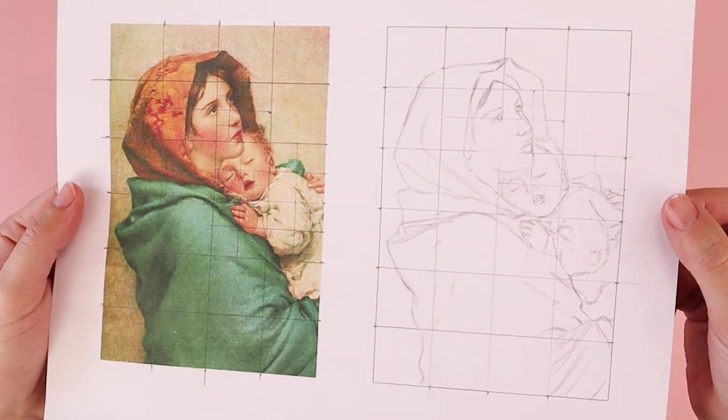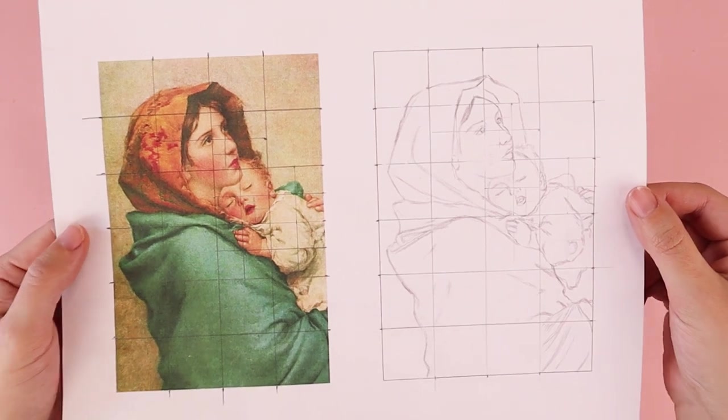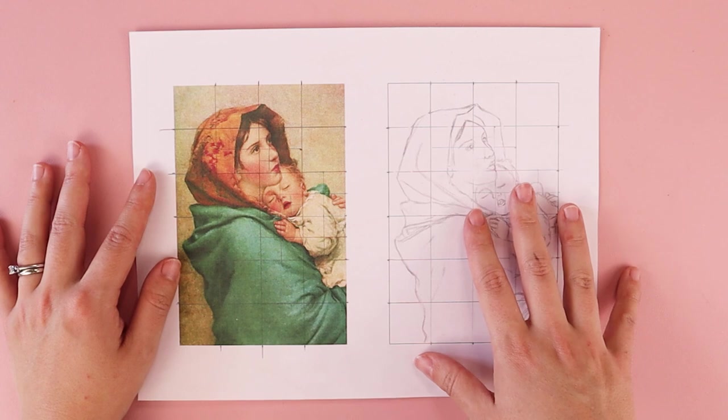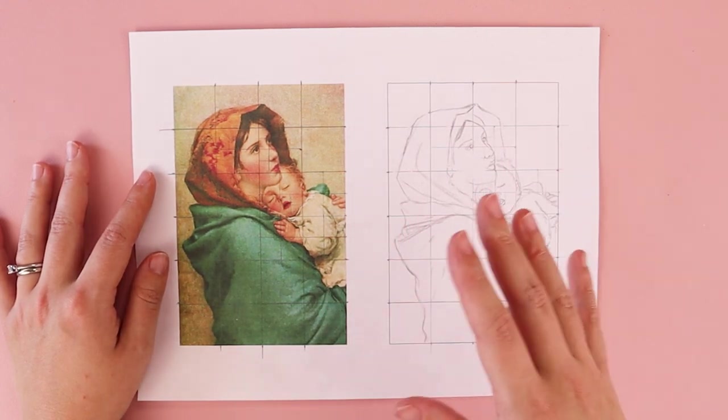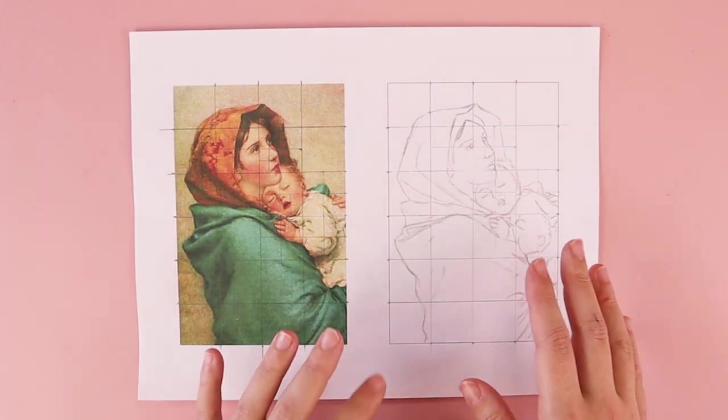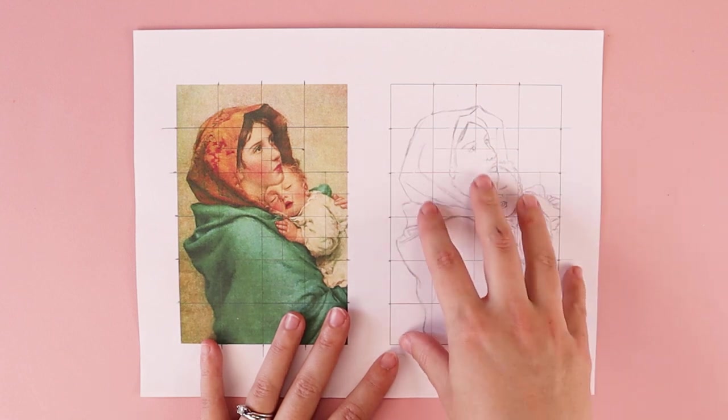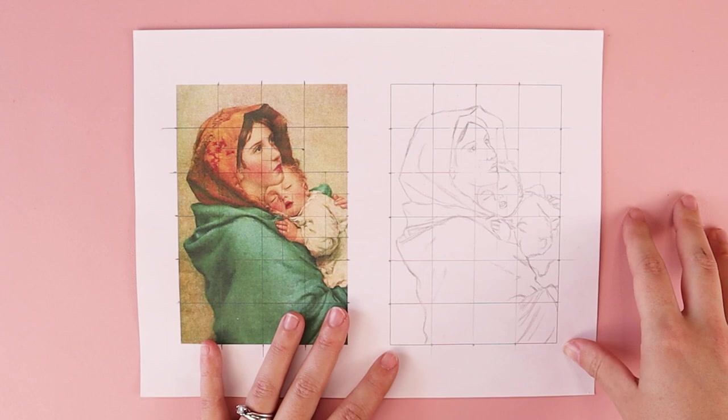So whenever you finish, you could either erase your grid lines, or if you wanted to transfer this sketch onto a nicer sheet of paper, so you can do watercolors or colored pencil or just regular shading. You can use something like tracing paper to trace the line art of your drawing and then transfer it onto a piece of nicer paper.